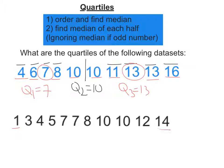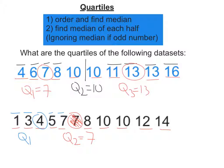Let's keep going. 1 and 14, 3 and 12, 4 and 10, 5 and 10, 7 and 8. So our Q2, our median, is 7. We ignore the median if there's an odd number. So the median of the bottom half is going to be 1 and 7, 3 and 4 — it's 4. So Q1 is 4. And 8 and 14, 10 and 12, so it's 10. Q3 is 10.